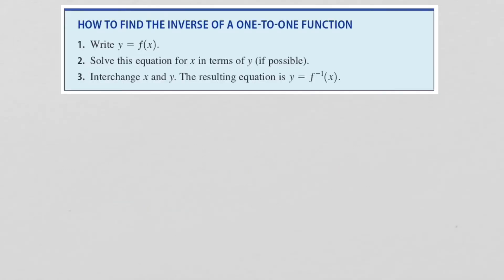Now let's look at how to find the inverse of a one-to-one function. There are three steps. First, write your function as y equals the function. Then — in either order — solve the equation for x in terms of y, and interchange x and y.